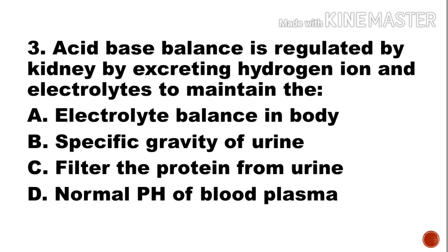Next question: Acid-base balance is regulated by the kidney by excreting hydrogen ions and electrolytes to maintain the — a) electrolyte balance in the body, b) specific gravity of urine, c) filter the protein from urine, d) normal pH of blood plasma. Option d, normal pH of blood plasma, is the right answer.